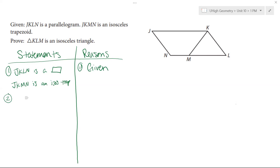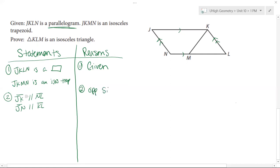So let's take a look at that parallelogram piece first. So in a parallelogram, I know that my opposite sides are parallel. So I'm going to mark that in my image, but I'm also going to state that in my proof. So I know that segment JK is parallel to segment NL, and that segment JN is parallel to segment KL. And the reason for both of those, reason number two is going to be opposite sides of a parallelogram are parallel.